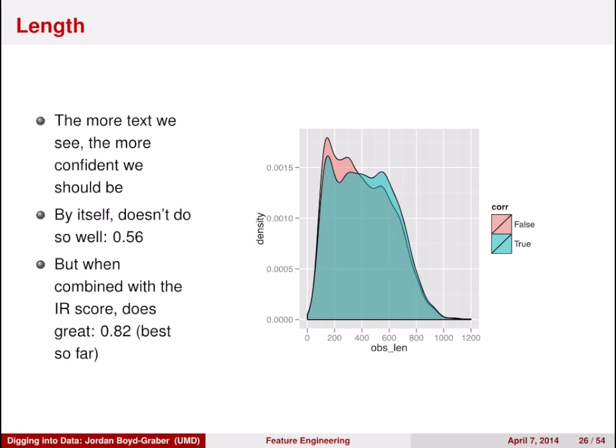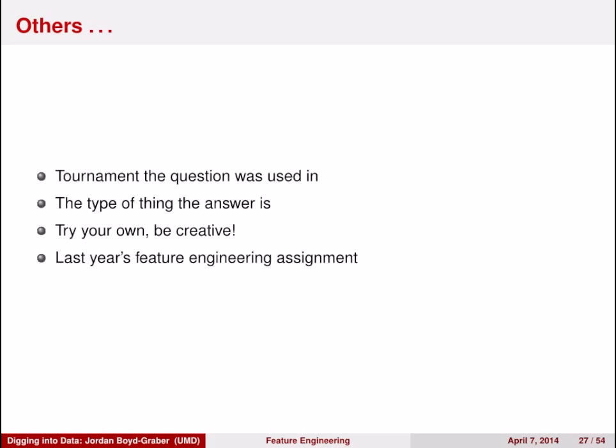There are other features that I've provided you. The tournament the question was used in, the type of thing that the answer is. But you shouldn't be limited to these sources of information. You can find additional information from the web. You can use Wikipedia. As with the regression assignment, we'll be using Kaggle to compete within the class to see who can come up with the best classifier. So work on creating good classifiers and creating good features.